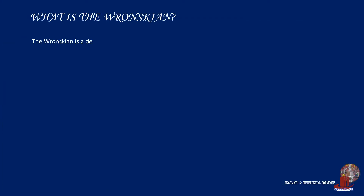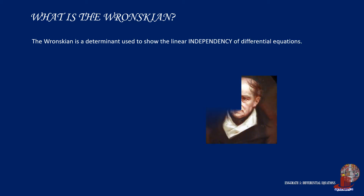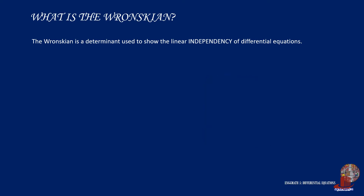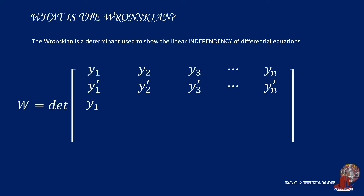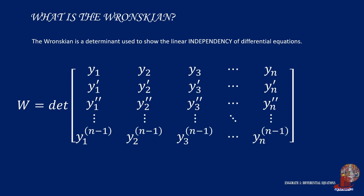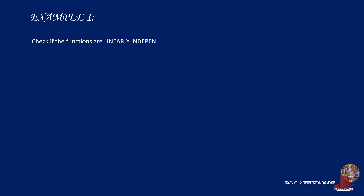The Wronskian method was introduced by Joseph Wroński in 1812, and among other functions, it can determine the linear independency of functions. The Wronskian is a determinant, so it requires a square matrix. The first row is where the functions are placed, and the second and succeeding rows will be the derivatives until reaching n minus 1. This determinant is assumed to be not equal to 0 to conclude that the functions are independent.